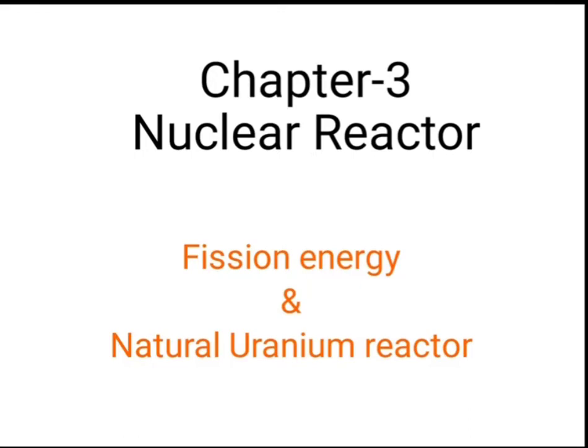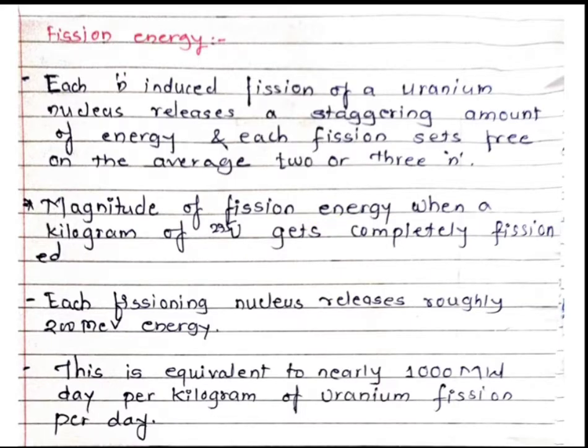As we know, fission means the splitting of nuclei. During the splitting or during the bond breaking, a large amount of energy is released and that energy is known as fission energy. When there is a nuclear fission, a number of isotopes can undergo fission and there is production of daughter nuclides. During each fission, some neutrons are emitted, isotopes are generated, and energy is liberated.